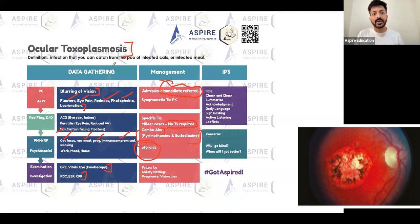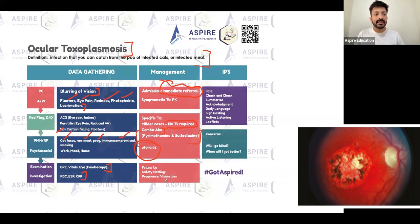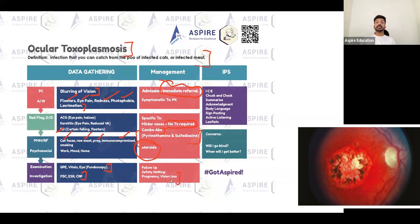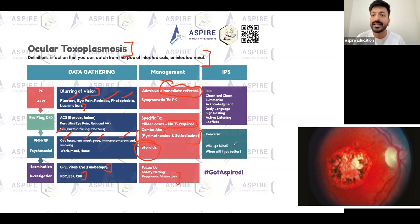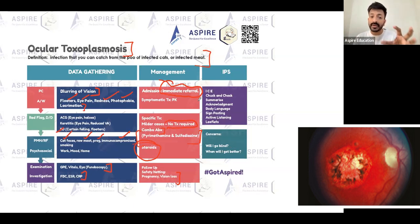Ocular toxoplasmosis is an infection you can catch from the feces of infected cats or from infected meat. Follow-up and safety netting are important. Be particularly careful if the patient is pregnant due to their compromised immune state. If the patient has vision loss, make sure they are sent to a specialist. It will take a few weeks to improve, but advise the patient to be careful when dealing with cat feces.